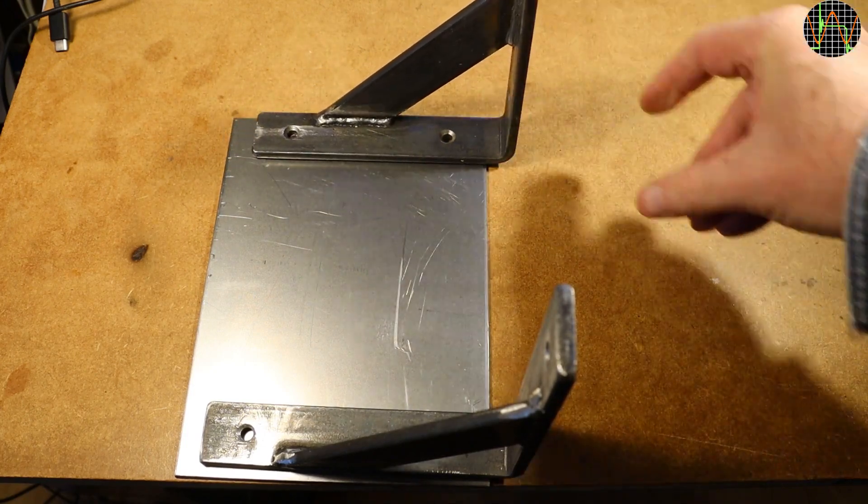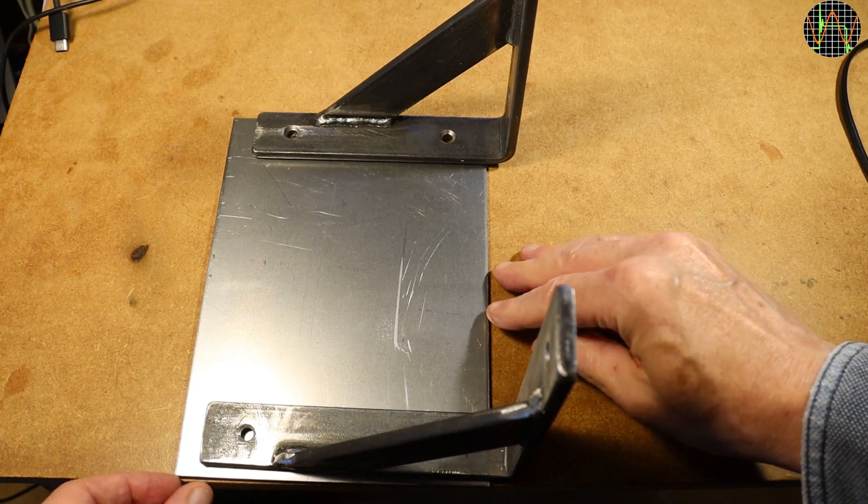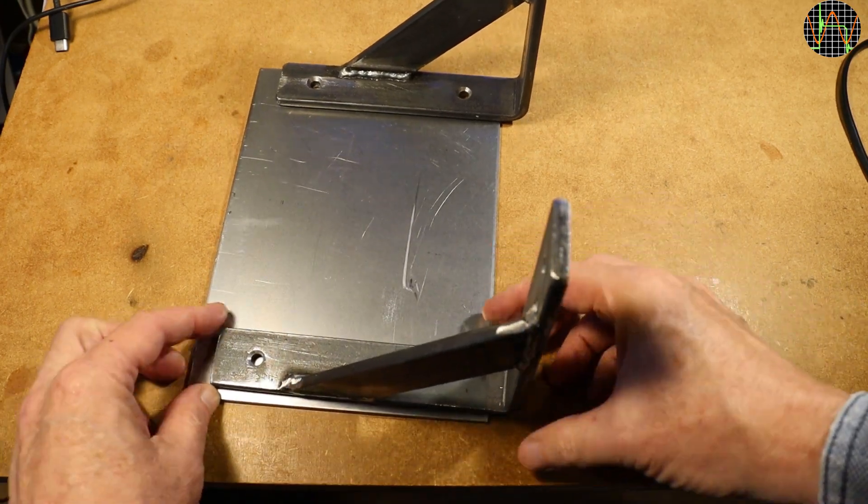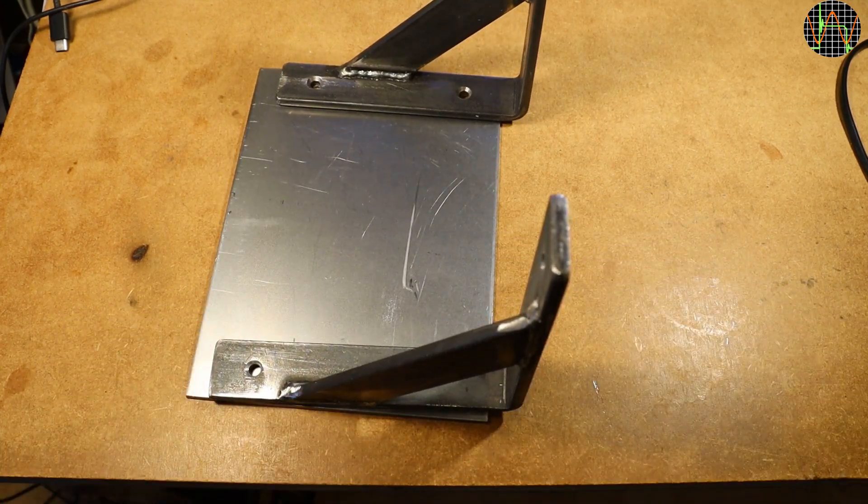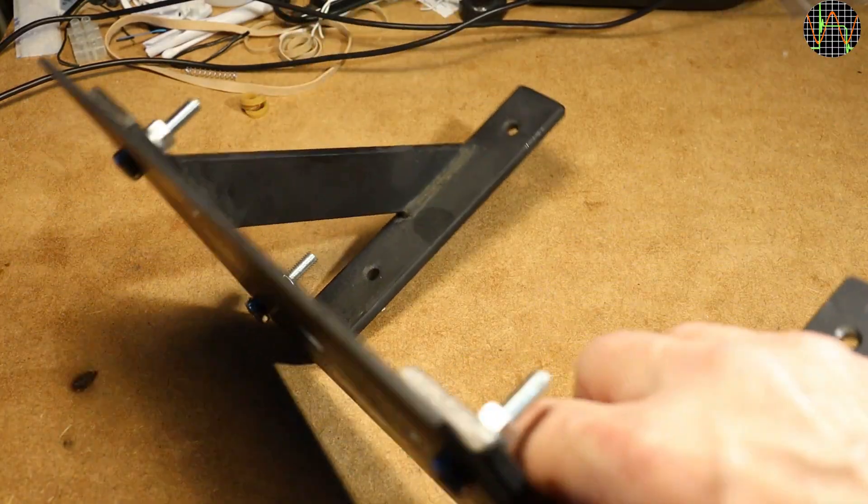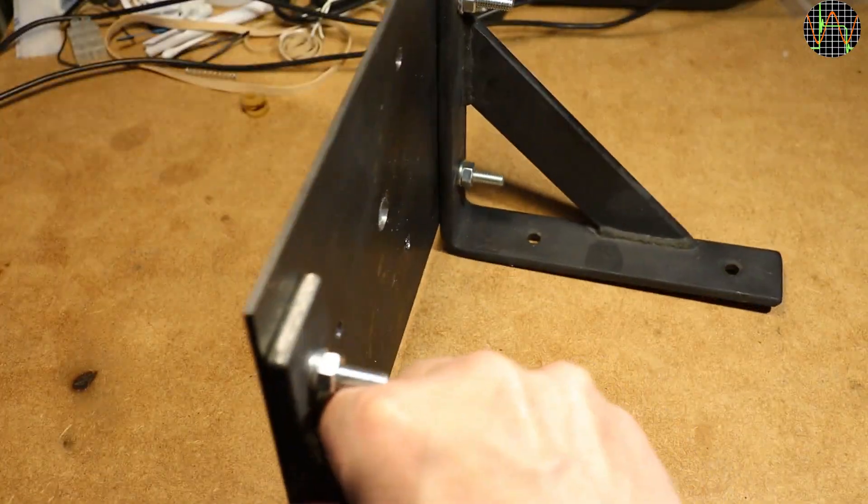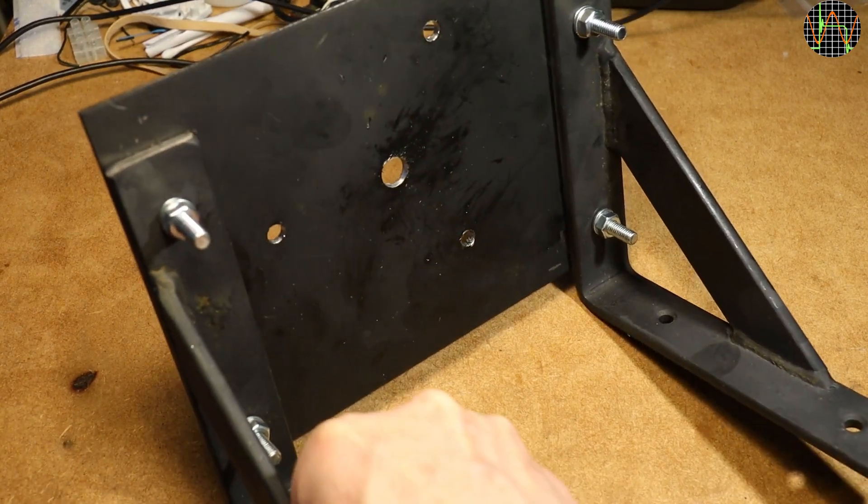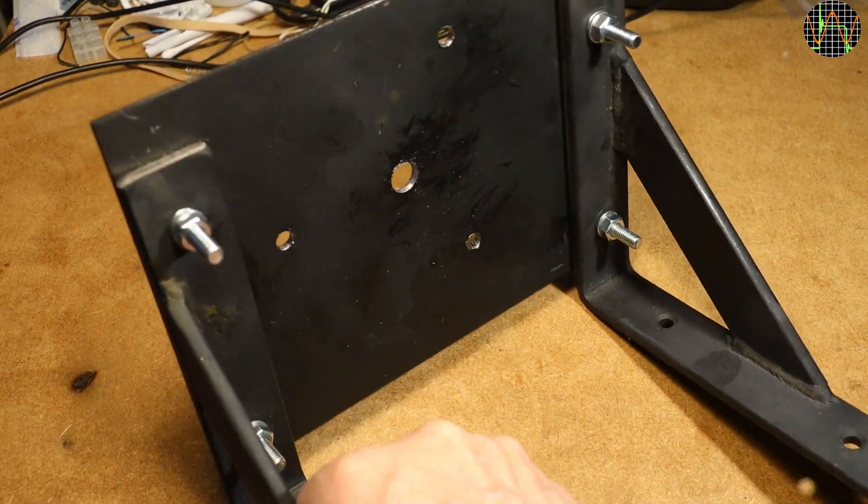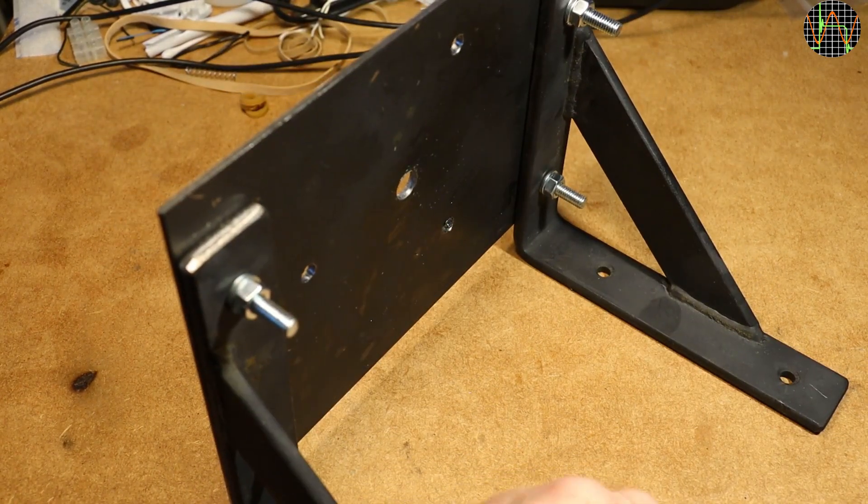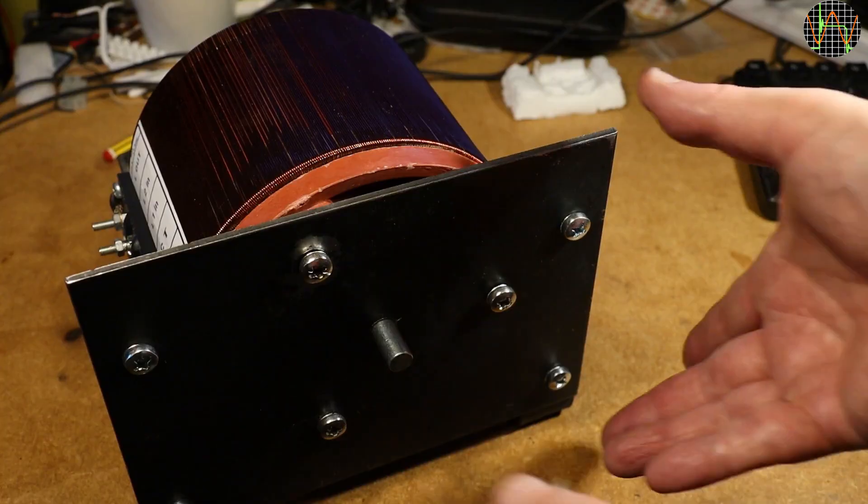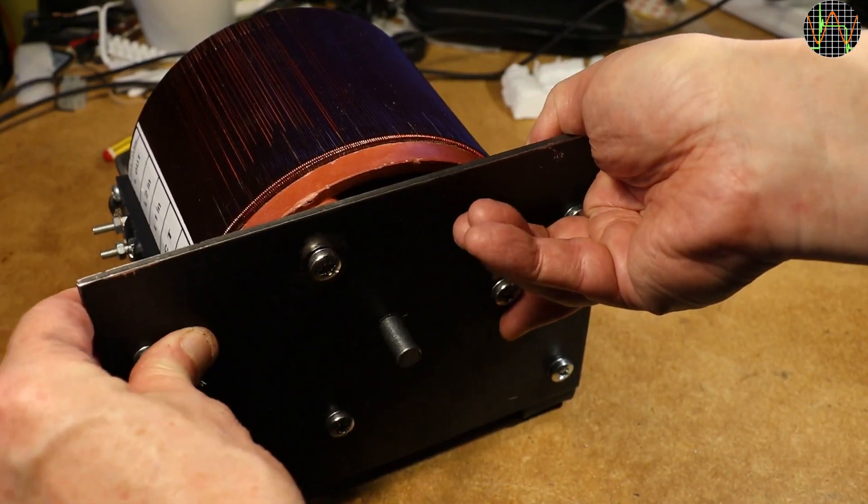The idea is that this plate will hold the transformer and the plate itself will be mounted on the floor of the enclosure using the angled brackets. I gave my new transformer mount a coat of paint and drilled the necessary holes for the transformer. One large center one for the shaft and three for the mounting.